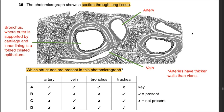Question 35: A photomicrograph shows a section of lung tissue. An artery is visible with thicker walls, a vein, and a bronchus with an outer layer supported by blocks of cartilage and inner folded ciliated epithelium. It is not a trachea because tracheal cartilage forms C-shaped rings, not blocks. The structures present are artery, vein, and bronchus. The answer is A.